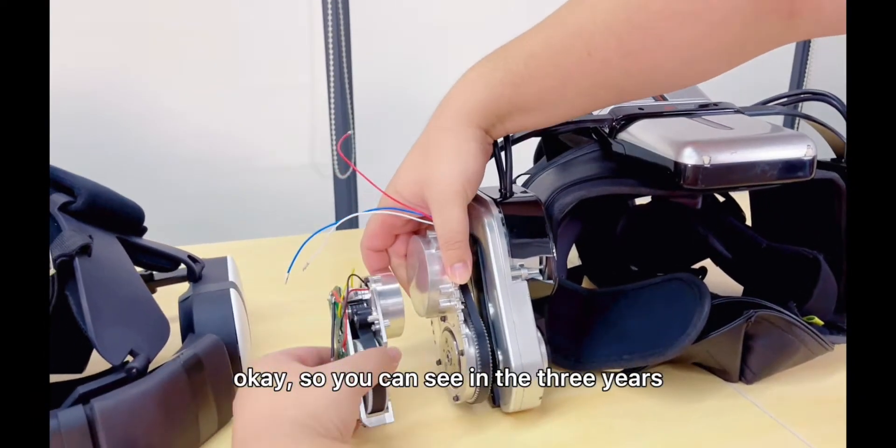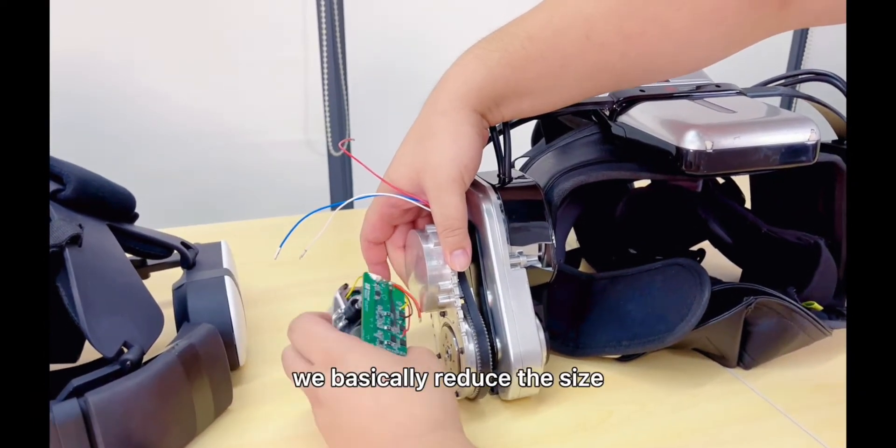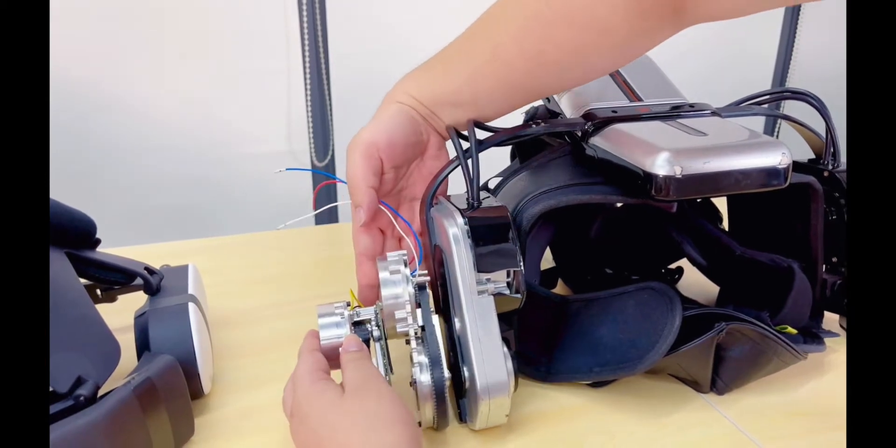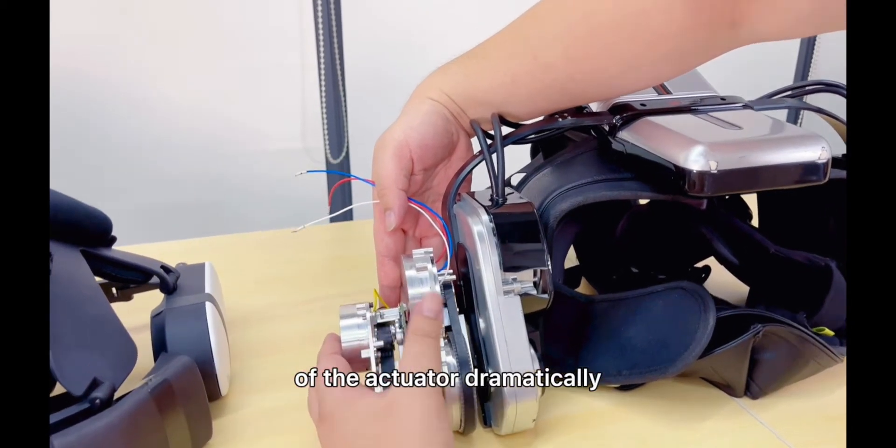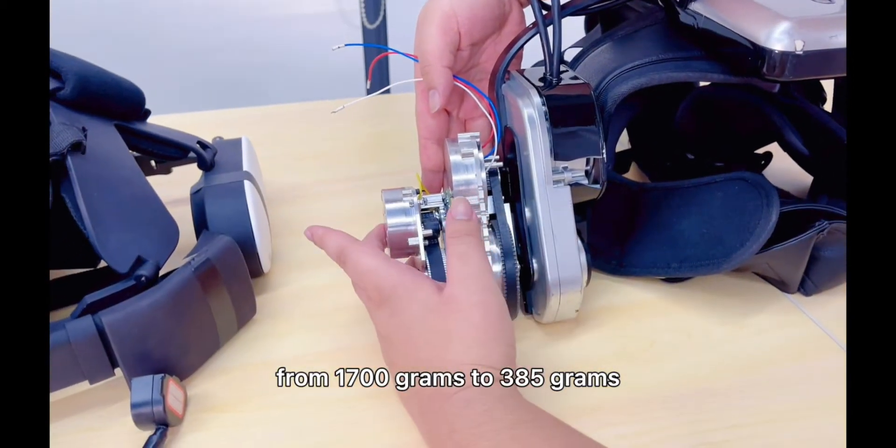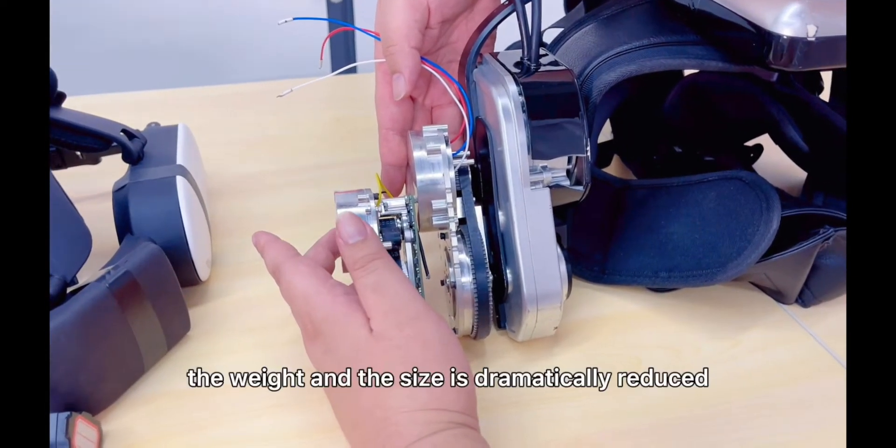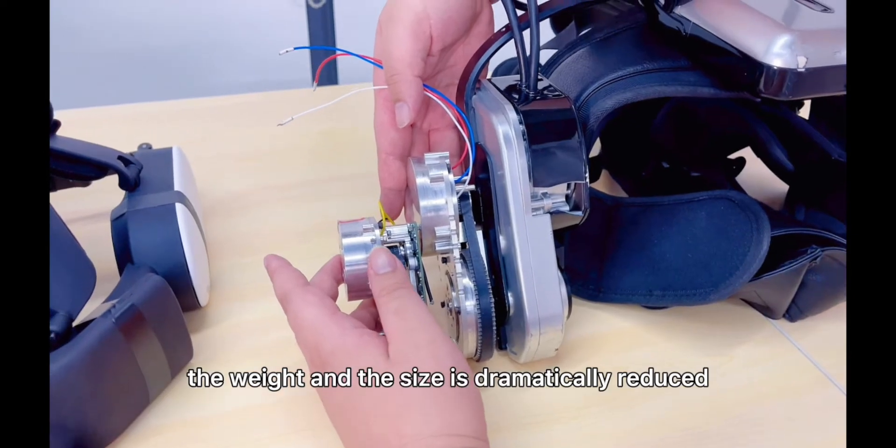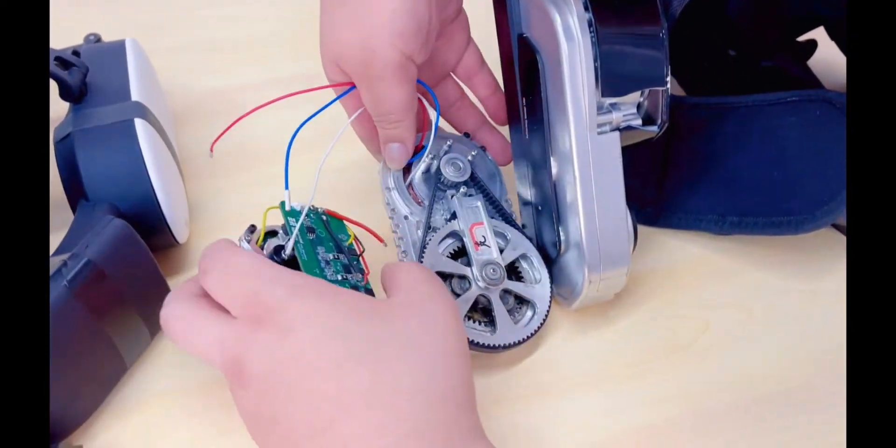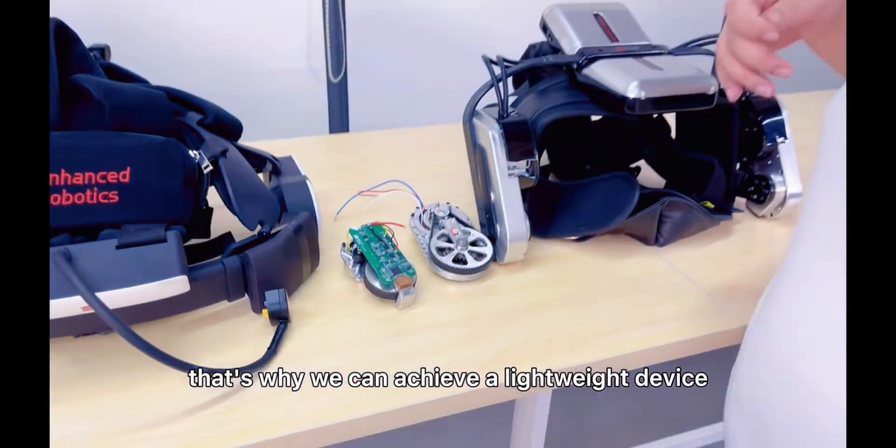So you can see in three years, we basically reduce the size of the actuators dramatically. From one kilogram, to 700 grams, to 385 grams. The weight and the size is dramatically reduced. That's why we can achieve a lightweight device.